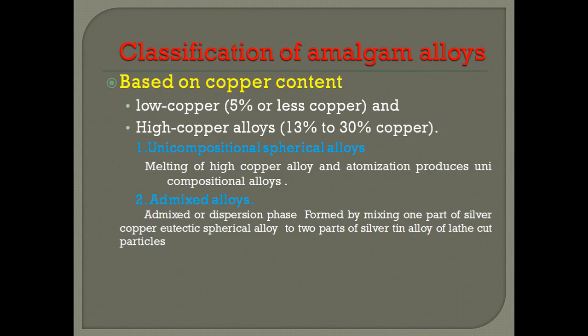Based on the copper content, amalgam alloys can be classified as low copper and high copper alloys. Low copper alloys generally contain less than 5% copper, whereas high copper amalgams mainly contain 13 to 30%.